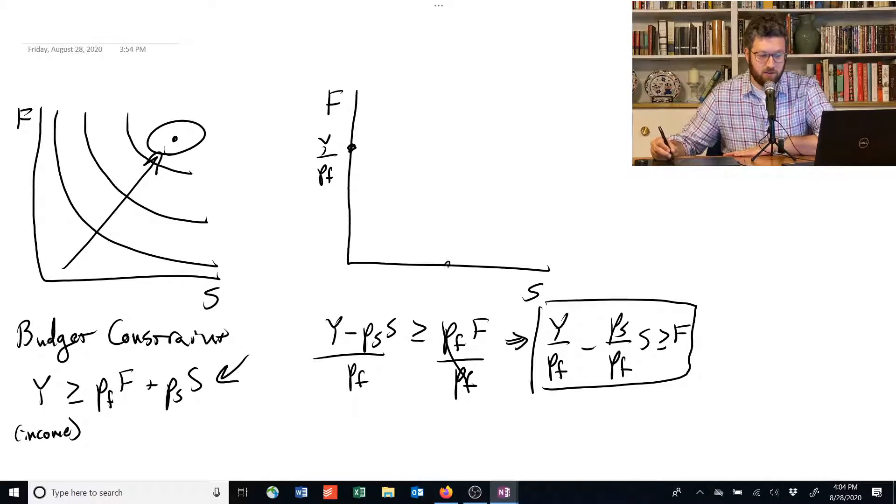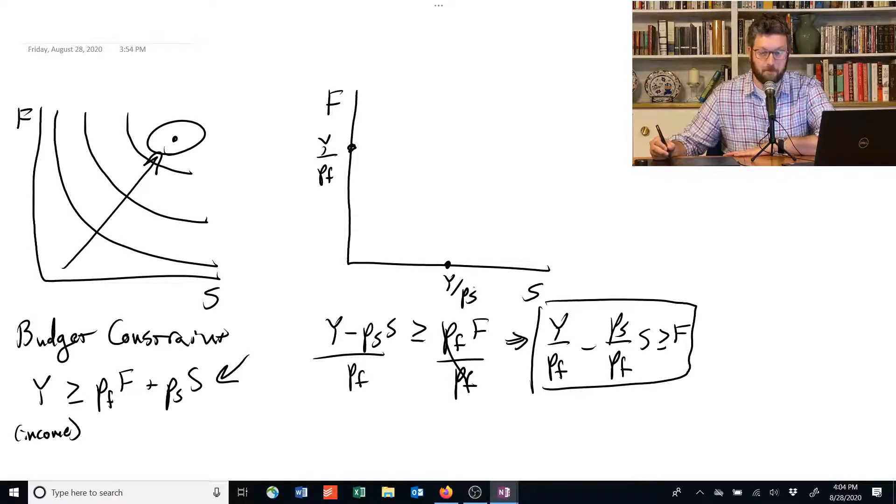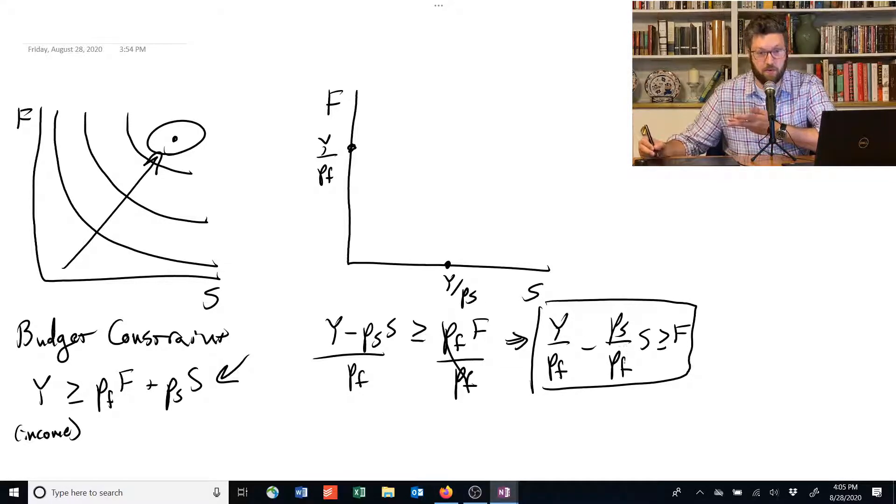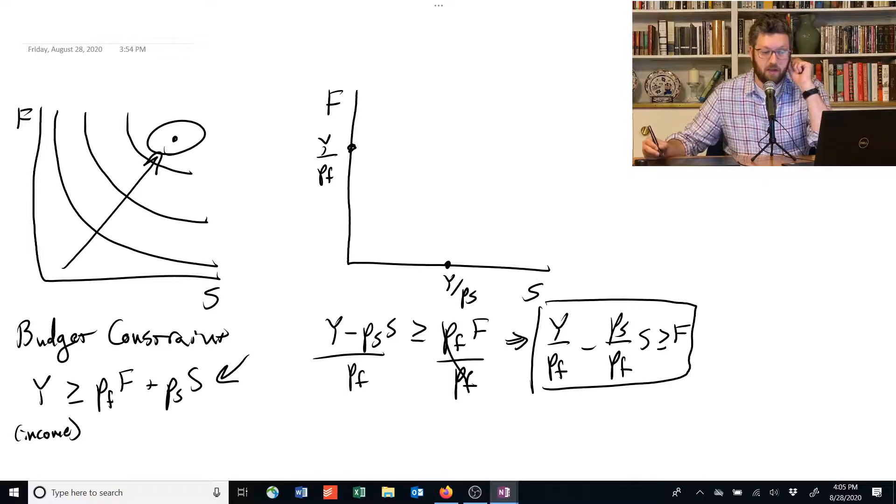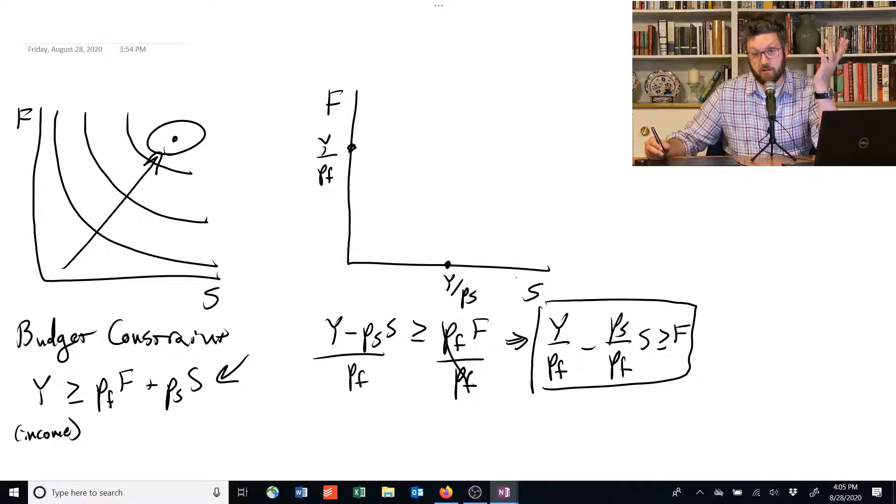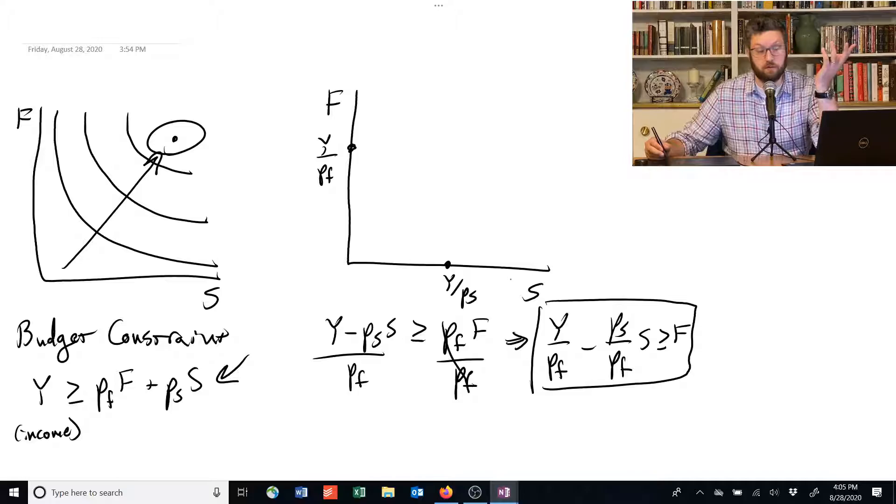Conversely, down in this corner over here, we're going to have Y divided by PS. Now what happens if we plug that in? For S, PS divided by PF times Y over PS. The PS is canceled, and we end up with Y over PF. And then we have Y over PF minus Y over PF, which is zero. And that tells us that if you spend all your money on shelter, you can't afford any food. Makes sense.